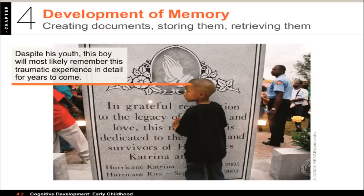Most people don't remember things from very early childhood — there's something called infantile amnesia, meaning you don't remember your infancy at all. However, autobiographical memory is facilitated when children talk about events with others. By age four, most children can remember events that occurred a year or year-and-a-half earlier. Major events like Hurricane Katrina, because they're so traumatic and socially embedded, are more likely to be remembered much longer.